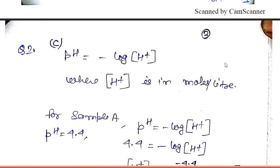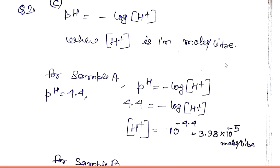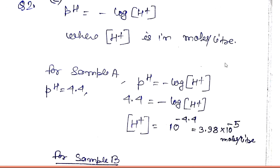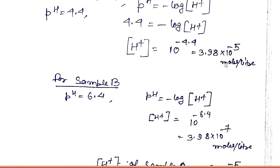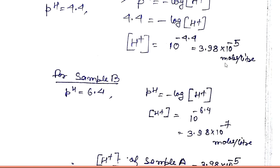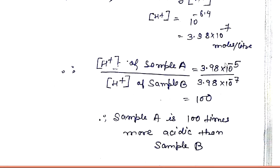Question number two: the basic formula of pH is minus log of hydrogen ion concentration, where concentration is in moles per liter. For sample A with pH 4.4, hydrogen ion concentration is 3.98 × 10⁻⁵ moles per liter. Finding the ratio of hydrogen ion concentration of sample A to sample B gives 100. Therefore sample A is 100 times more acidic than sample B.